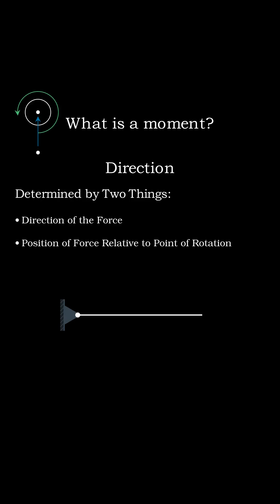To see how these two factors affect the direction of a moment, let's take a quick look at a teeter-totter. Here, the teeter-totter pivots in the middle, so we can push or pull on either side of the pivot.